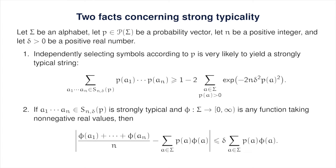The second fact is that if we have a delta strongly typical string along with a non-negative real-valued function phi defined on our alphabet, then the average of the values of the function phi across the symbols in the string won't deviate too much from the average value of the function over the alphabet according to the underlying probability vector p. Notice that the right-hand side is proportional to delta, with the constant of proportionality being the average value of the function, and in particular the right-hand side is independent of n. Both of these facts are relatively easy to prove, and we'll take a moment to prove them.